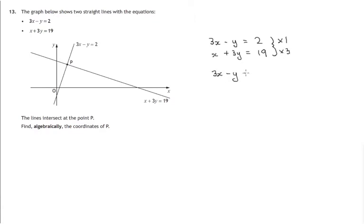3x minus y is still 2. Multiplying everything both sides, everything in both sides, both terms here, by 3. So we get 3x, 3 times 3y, 9y. 3 19s, 57.